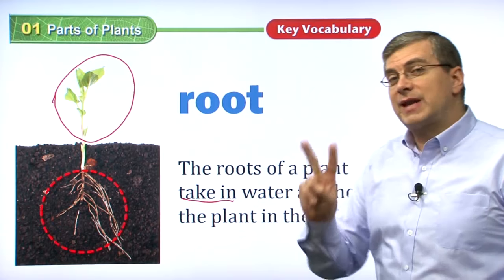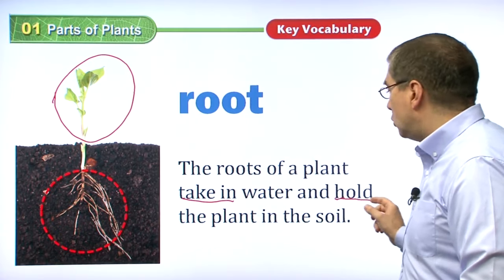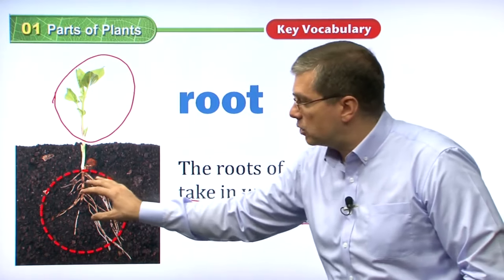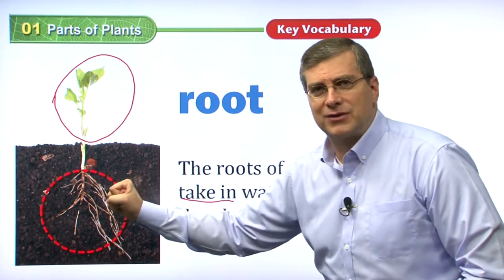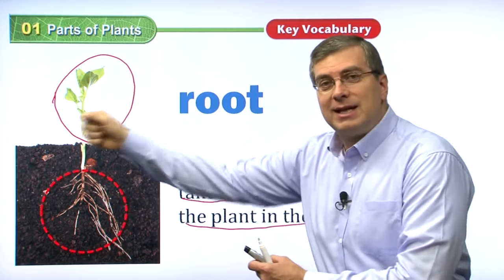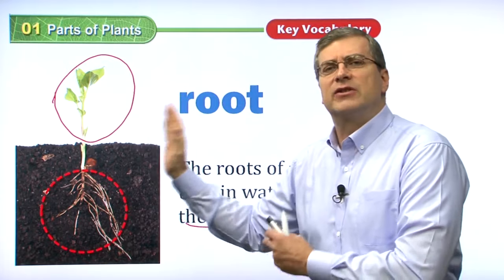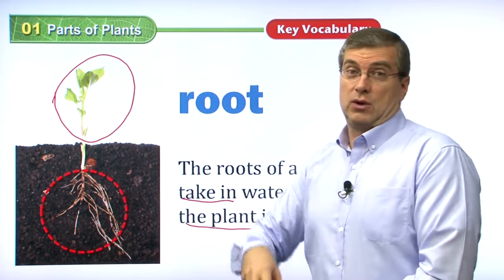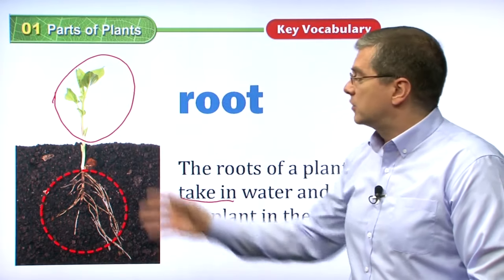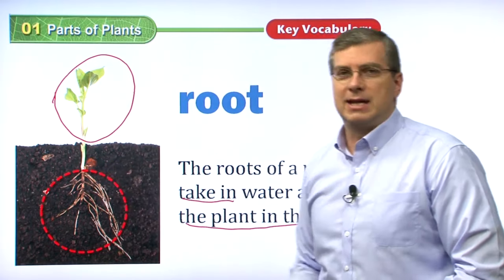The roots help the plant take in water. Also, the second thing that roots do is they hold the plant in the soil. These roots are like strong legs in the ground so the plant does not fall over. If there's a strong wind, it stays sturdy and strong. For a tree, which is very heavy, that's very important. So roots help the plant stay strong in the soil.